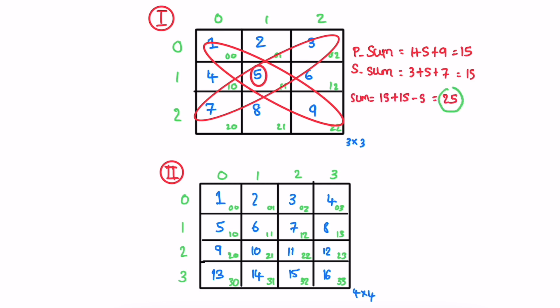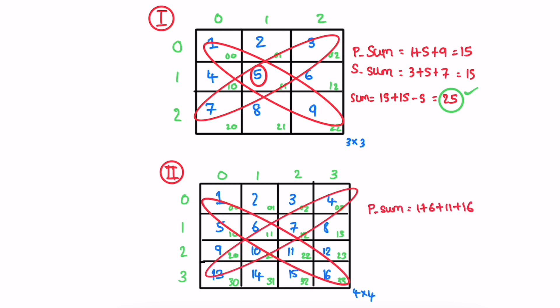So the total sum is equal to 25, and we return 25 as the output. Now let's calculate the output for the second example. This is the primary diagonal and this is the secondary diagonal. The total sum for the second example is 68, which will be returned as output.